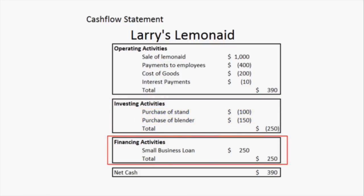The last section is financing activities, and this covers things like business loans or the selling of stock. If you were to sell stock, you would see a positive number here. If you were to repurchase that stock, you would see a negative number, and that can be a good thing as far as investors are concerned — seeing a company buying its stock back.